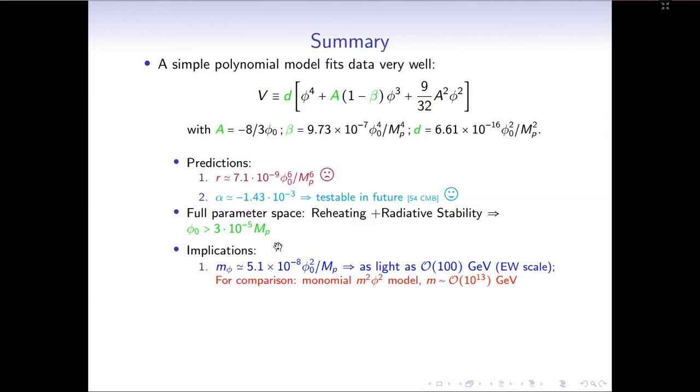And there are also some implications from this simple inflation model. So we found the inflaton mass can be as light as 100 GeV. And for comparison, I just want to mention for the usual single term monomial model with quadratic inflation scenario, the inflaton mass has to be around 10 to 13 GeV. So you see for our model, the inflaton mass can be 11 orders of magnitude lower than the usual quadratic model.